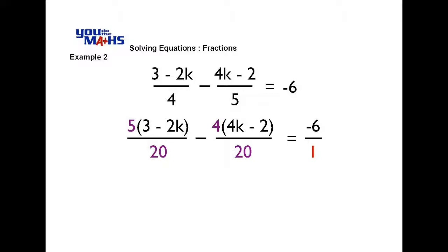We'll change the right hand side accordingly so its denominator matches the left hand side. That means that everything on the right hand side must be multiplied by 20, and we end up getting negative 120 over 20.